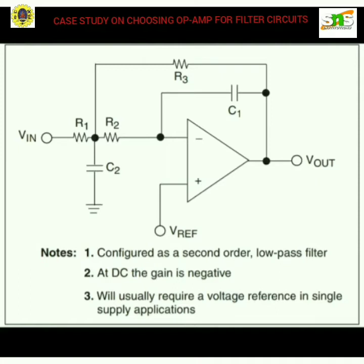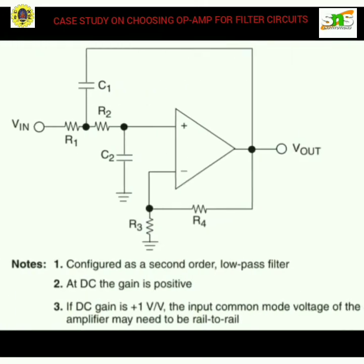The two key specifications to initially consider when designing with either of these topologies are gain bandwidth product (GBWP) and slew rate. Prior to selecting the op-amp, you need to determine the filter cutoff frequency, referred to as Fc. This is the frequency where your filter starts to attenuate the signal, also known in some literature as the pole frequency.